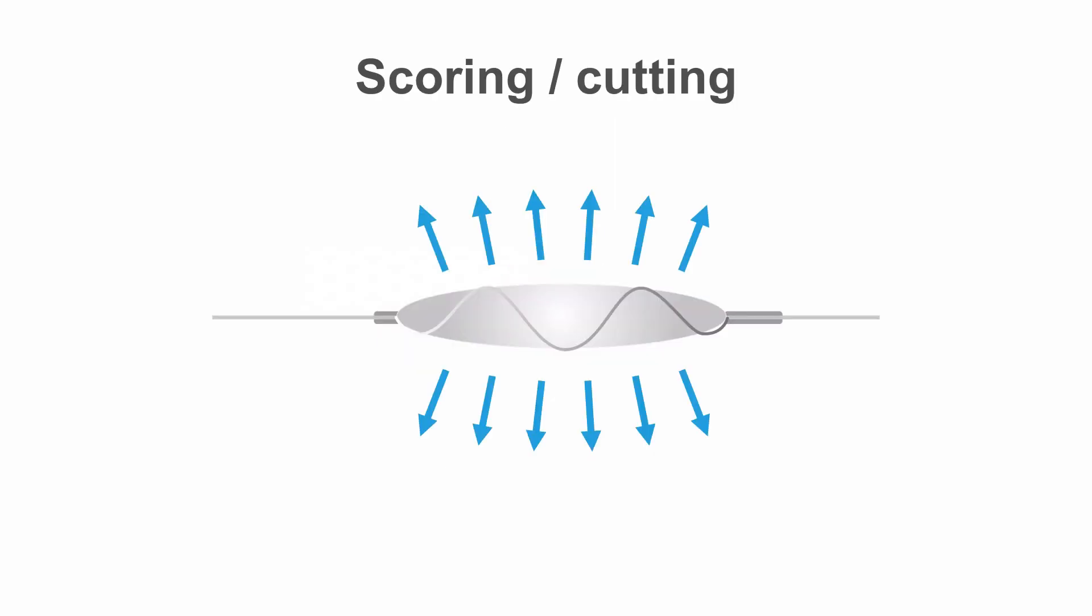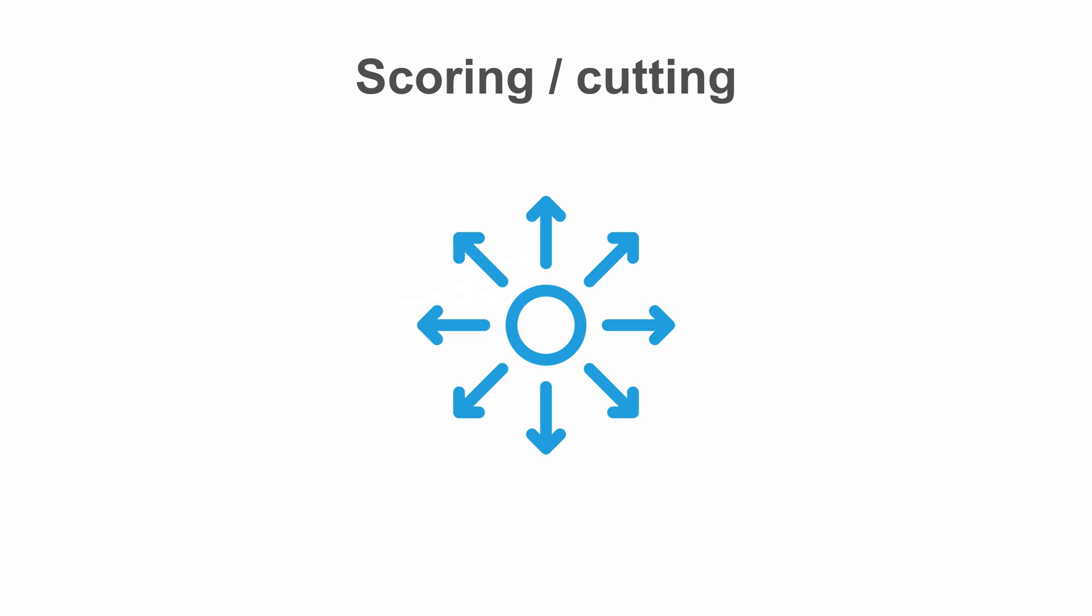One technique is to use a scoring or cutting balloon to modify the ring of calcification. These balloons work by having metal on the outside of the balloon and delivering focused pressure, which leads to linear tears or cracks in the calcification, so that the artery can then be further expanded with a normal balloon.